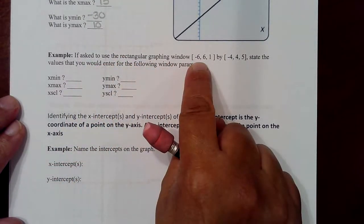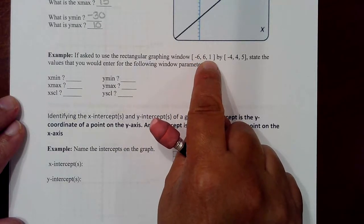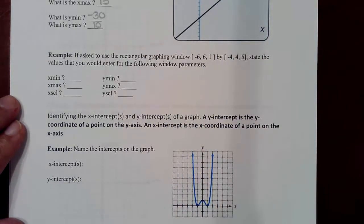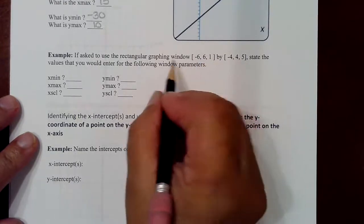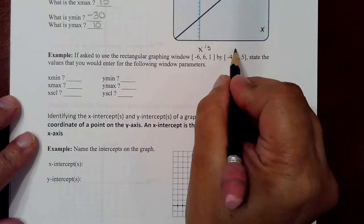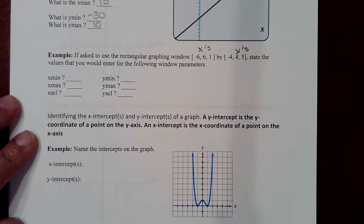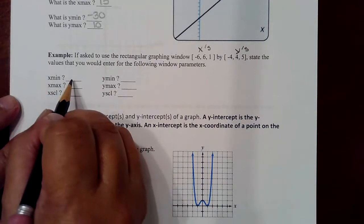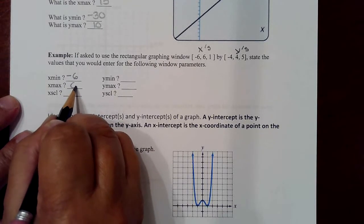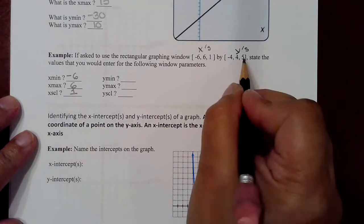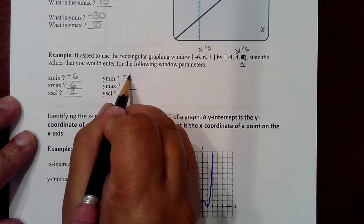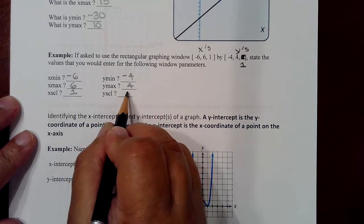If you're asked to use the rectangular window negative 6 to 6 with a scale of 1, and then on your Y's negative 4 to 4 with a jump of 1 — the X min here would be negative 6, the X max would be 6, and the X scale would be 1. We're going to use Y min of negative 4, Y max of 4, and the scale would be 1.